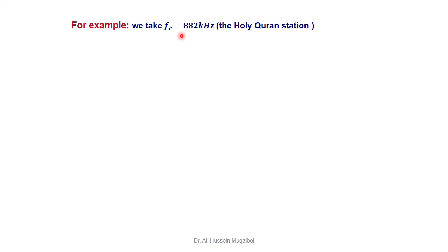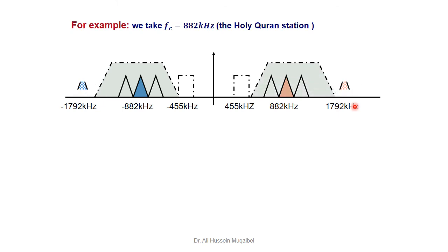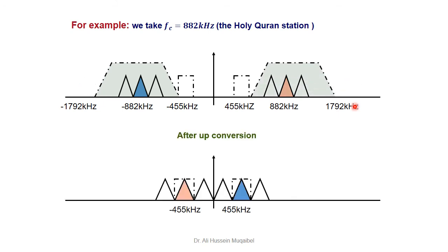Let's work through a numerical example. For the AM channel centered at 882 kHz, what is the image station? We add 2×FIF = 2×455 = 910 kHz. Adding 910 to 882 gives 1792 kHz — that is the image station. With a proper RF filter, we can eliminate the image station and receive the desired signal cleanly.